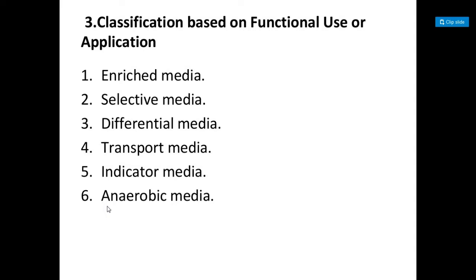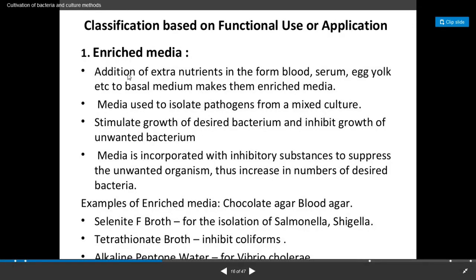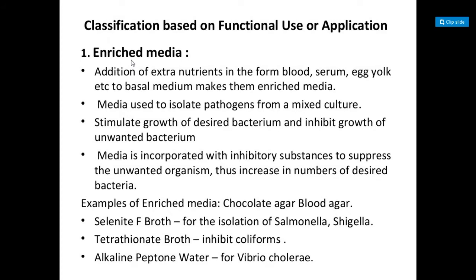Let's start with the classification of culture media on the basis of functional use or application. The first type is enriched media. The addition of extra nutrients — which may be in the form of blood, serum, or egg yolk — to a basal nutrient medium makes that particular media an enriched media. The basal nutrient medium consists of some basic or required components for the growth of bacteria, but when additional nutrients such as blood, serum, or egg yolk are added, we call it enriched media.